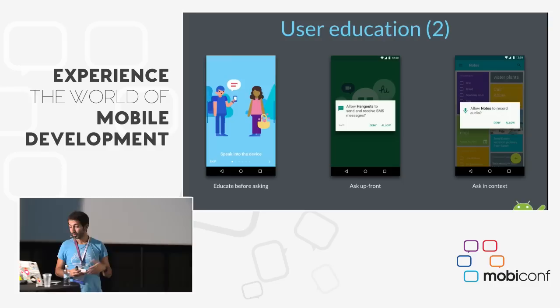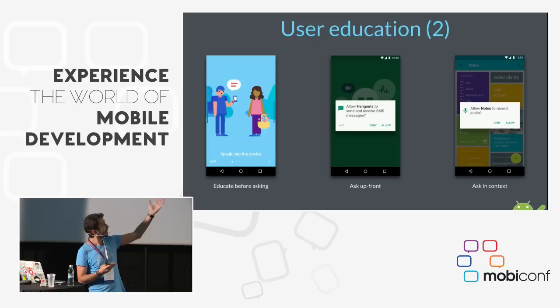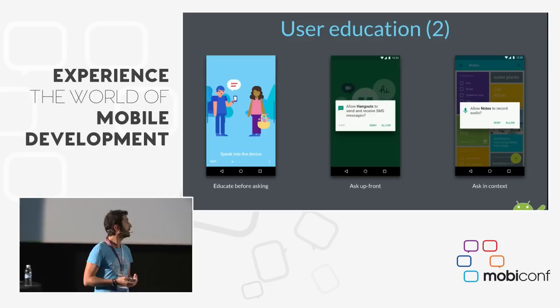'Ask upfront' — for some apps like Hangouts, the first time it's going to ask for three permissions in a row. Now in Android 6, you can download an application without accepting anything.